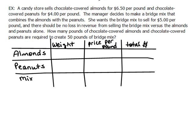Try to picture what's happening — you're taking some almonds and some peanuts and mixing them together to create a new concoction. Thinking about how you buy things at the store, like produce, you weigh it on the scales. If it's so much per pound, you multiply the weight of the object times the price per pound to tell you how much you're going to pay total. That's what I used as my column headings here.